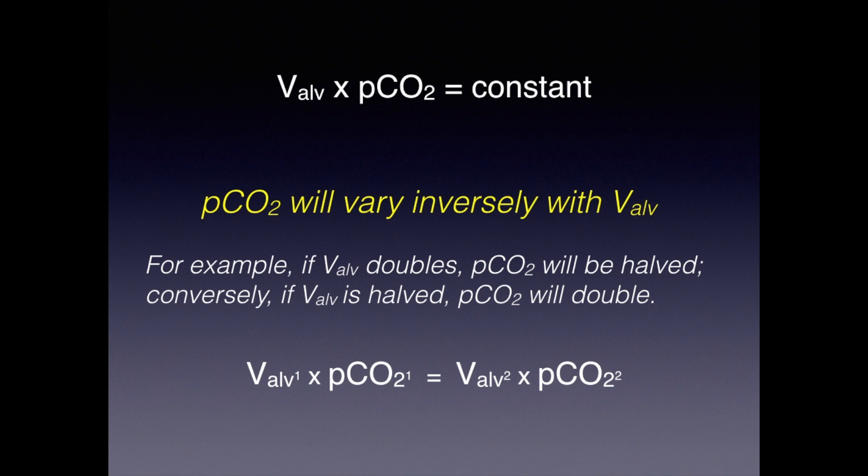For example, if alveolar ventilation doubles, then pCO2 will be halved, and conversely, if alveolar ventilation is halved, then pCO2 will double. For those who like math equations, we can write that for a given patient, alveolar ventilation times pCO2 under one set of conditions will equal the product of alveolar ventilation and pCO2 under a different set of ventilatory conditions.